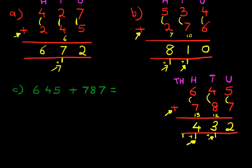TH for thousands. We've got no thousands here, no thousands here, but we have got one over here. And that is our answer. One thousand, four hundred, and thirty-two.